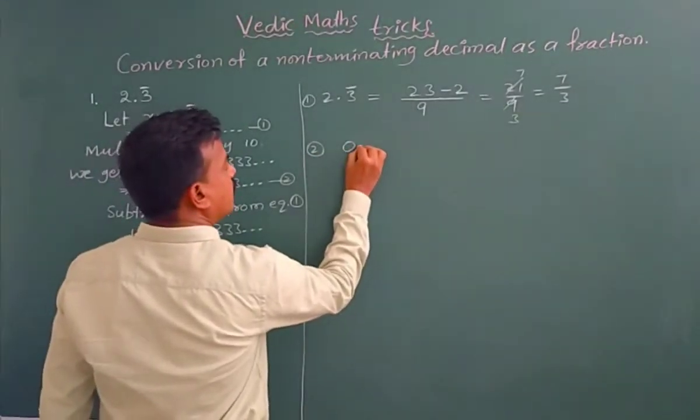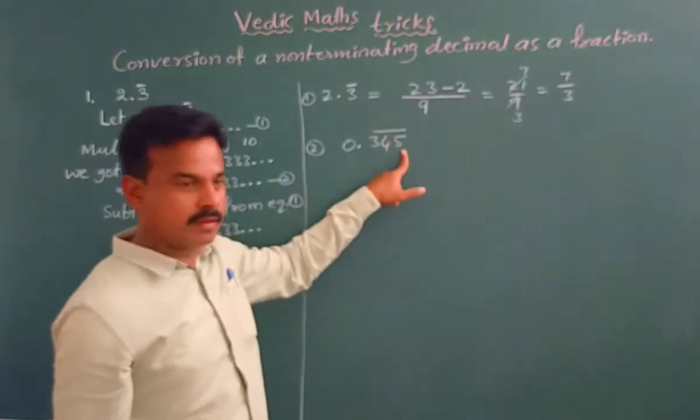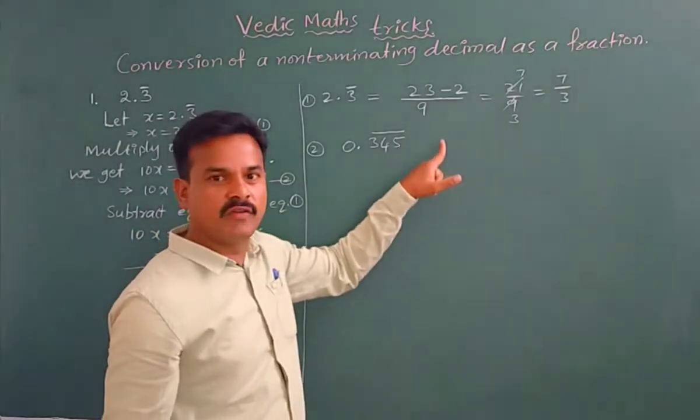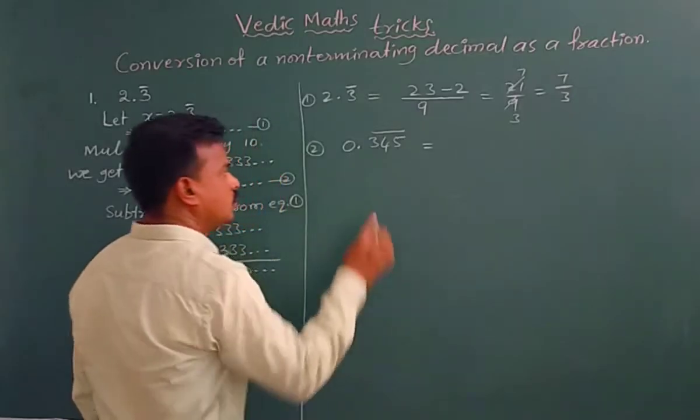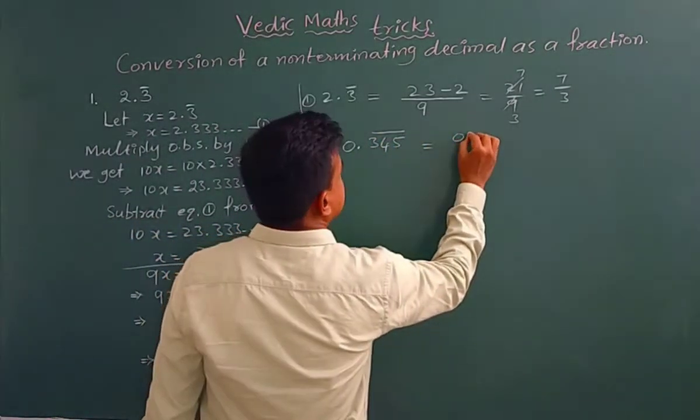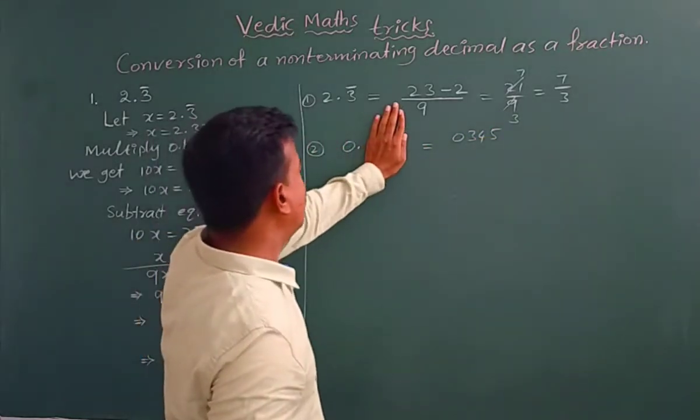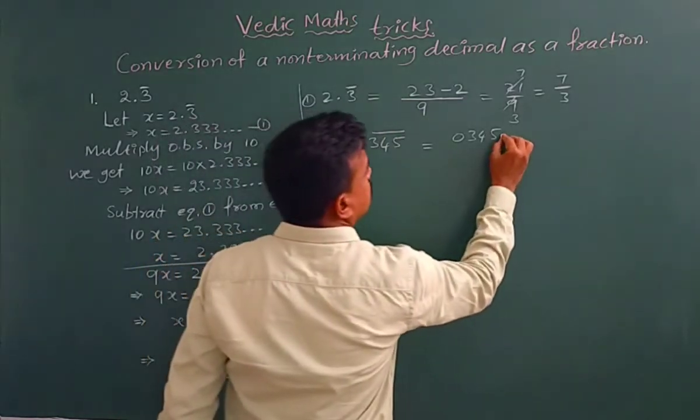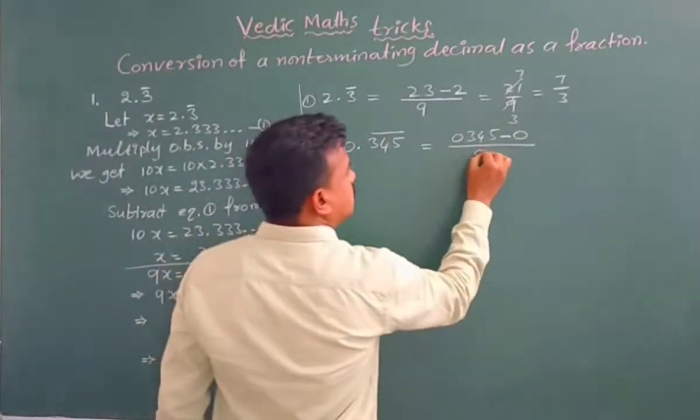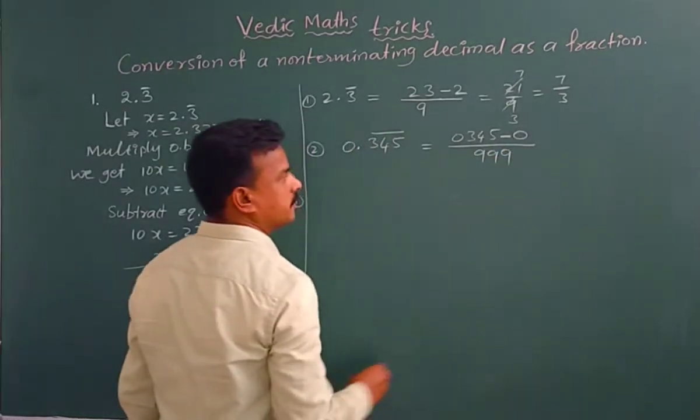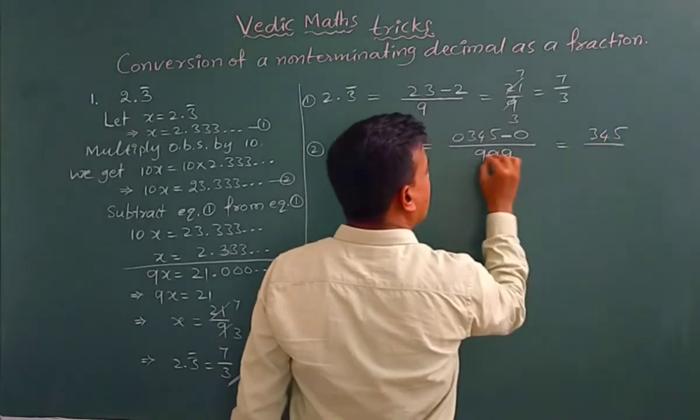Second example we have to take 0.345 bar. This bar is for these three digits, that means 0.345 345 345 continuing. Now the answer is, you remove point and bar, write the numbers as this, 0 345. Without bar how many digits are there? There is no digits, only 0, minus 0. Under the bar 3 digits are there, so 9 9 9 write in the denominator.